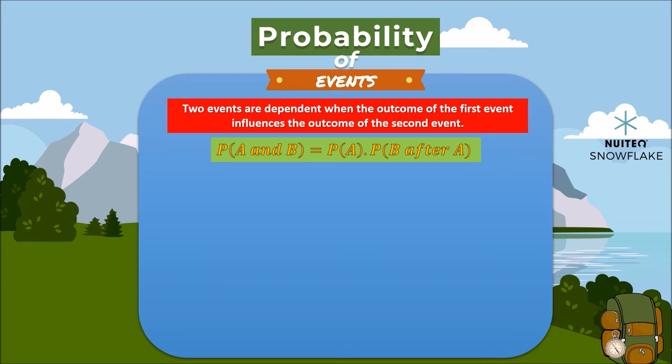Two events are dependent when the outcome of the first event influences the outcome of the second event. The probability of two dependent events is the product of the probability of A and the probability of B, after A occurs. Let's analyze the following example.